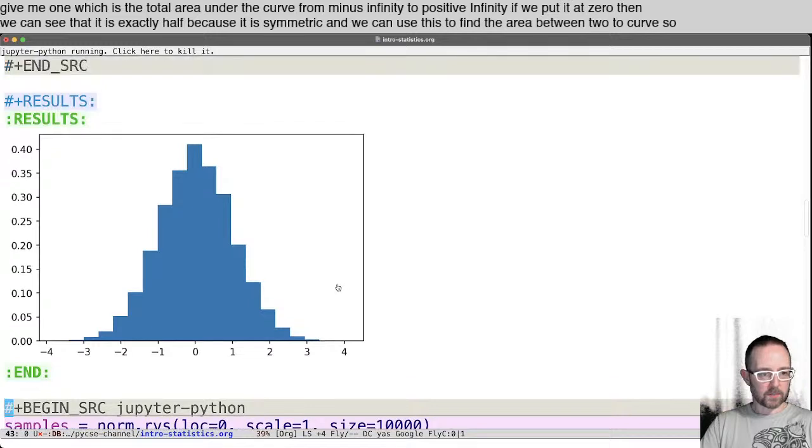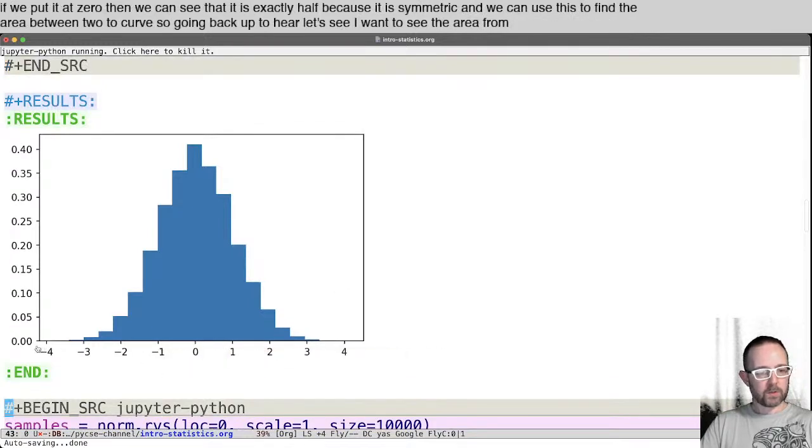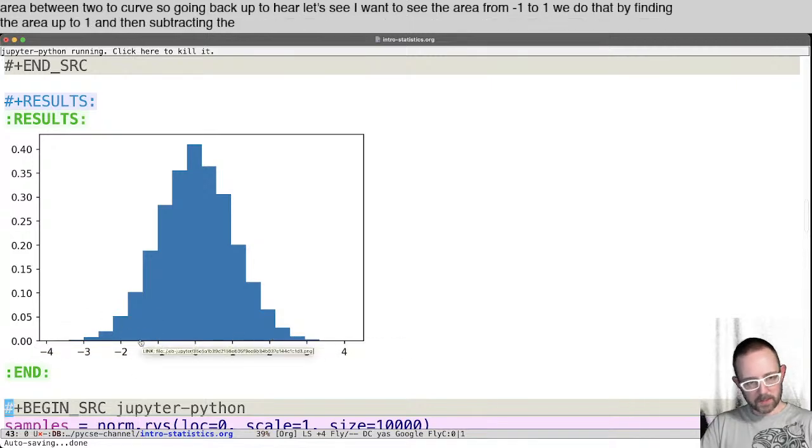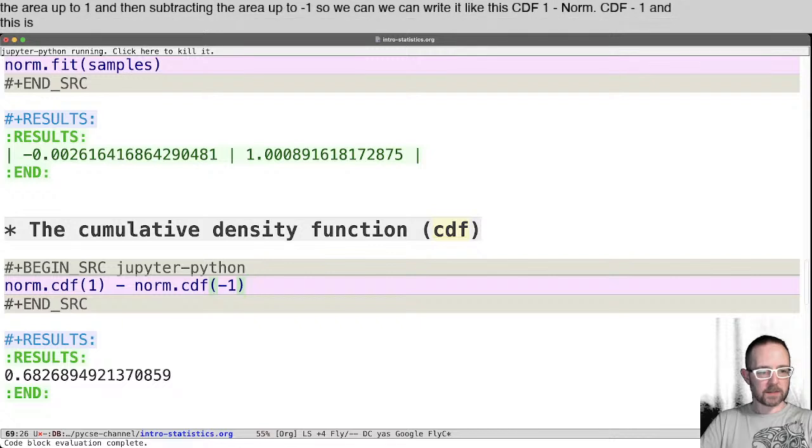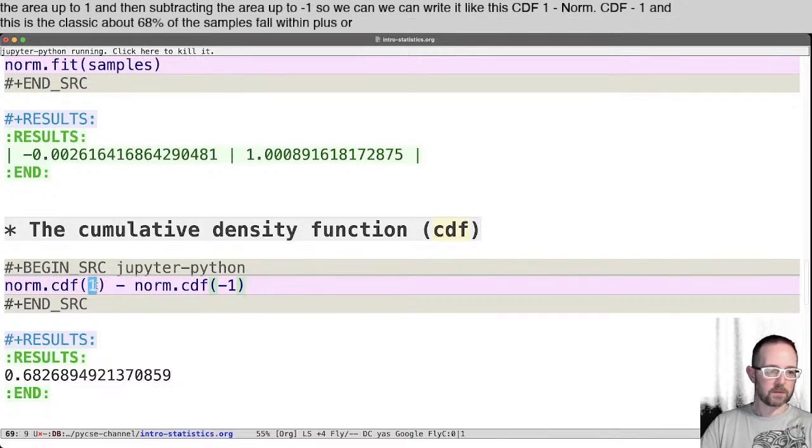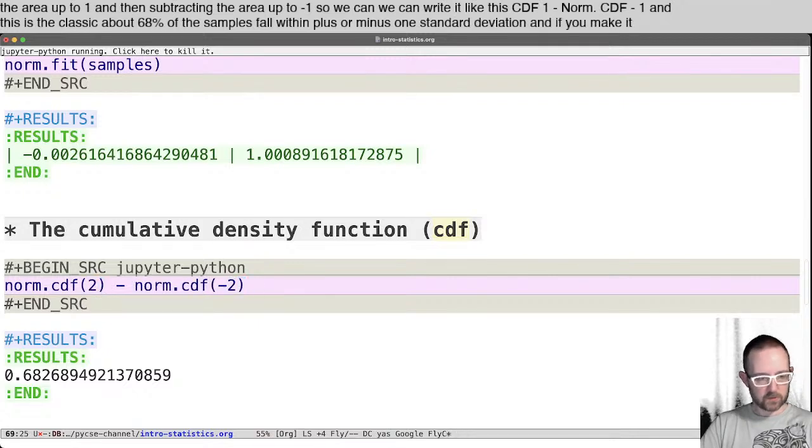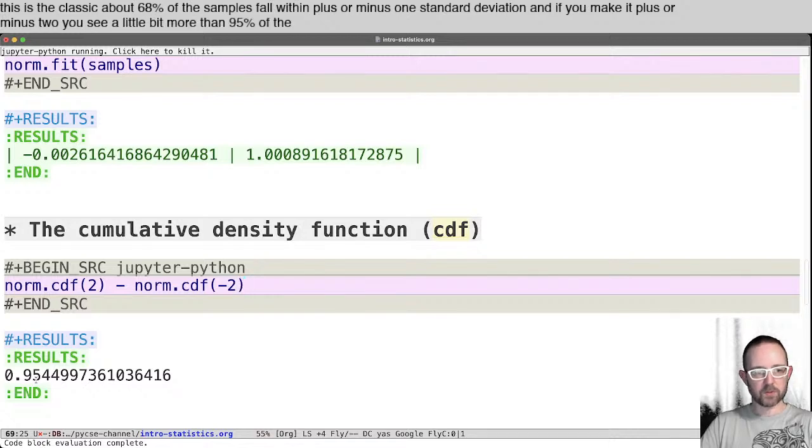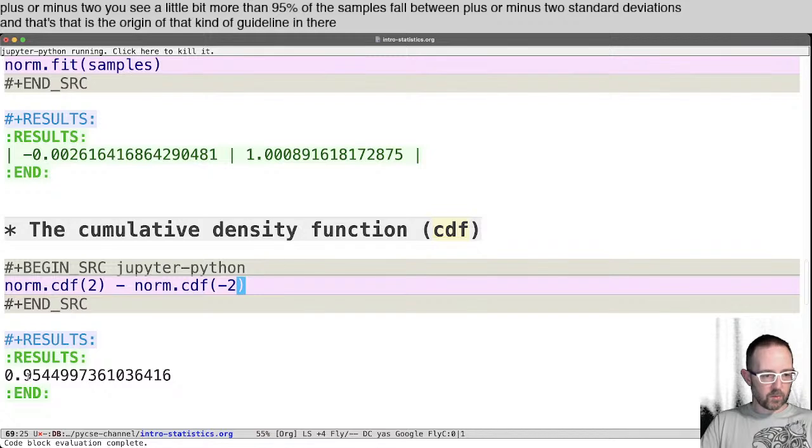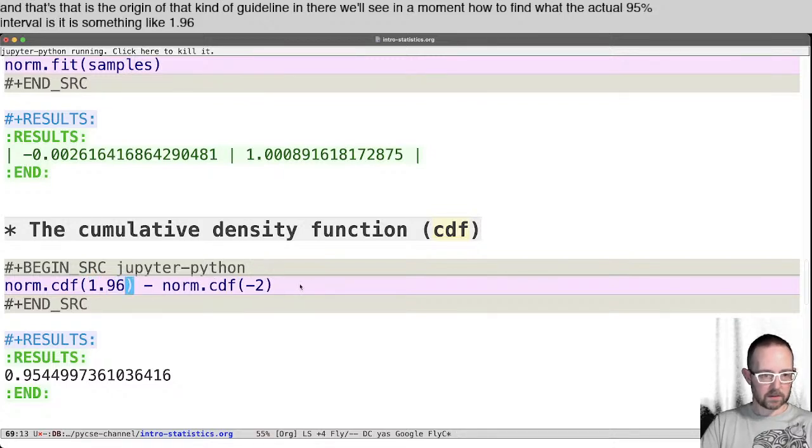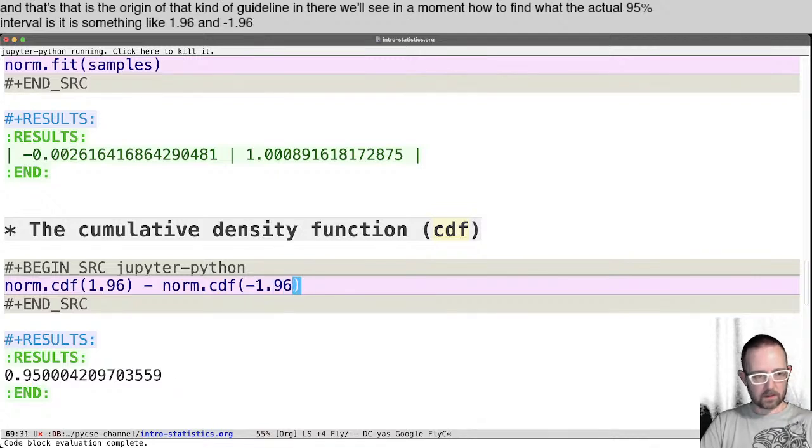And we can use this to find the area between two curves. So going back up to here, let's say I want to see the area from minus one to one. We do that by finding the area up to one and then subtracting the area up to minus one. So we can write it like this, cdf1 minus norm.cdf minus one. And this is the classic about 60% of the samples fall within plus or minus one standard deviation. And if you make it plus or minus two, you see a little bit more than 95% of the samples fall between plus or minus two standard deviations. And that is the origin of that kind of guideline in there. We'll see in a moment how to find what the actual 95% interval is. It is something like 1.96 and minus 1.96, I think something like that. Pretty close.